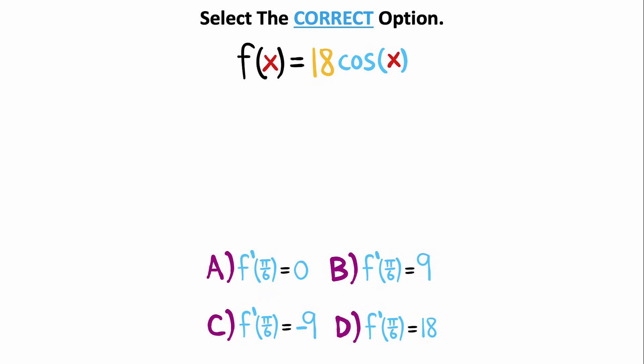Not many people can solve this calculus problem. So here we are given a function, and we're asked which of the four statements below is correct. Now, to solve this problem, I'm going to start by taking the derivative of our function. The 18 is not going to change, but the derivative of cosine comes out to negative sine. So we end up getting negative 18 times the sine of x for our derivative.